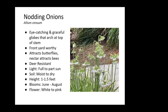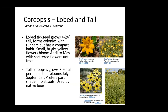Coreopsis are great in the native plant garden because there are several varieties that are native. They have long-lived blooms, are easy to propagate, and have a variety of yellow colors.